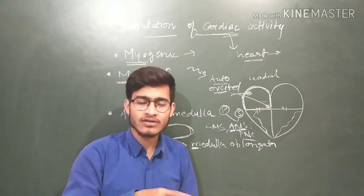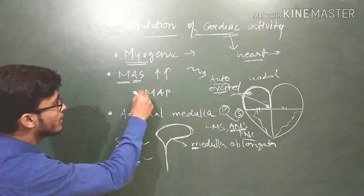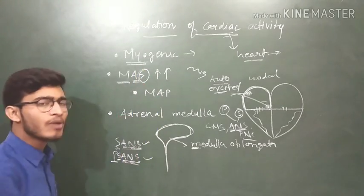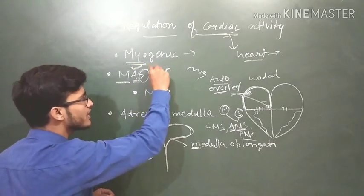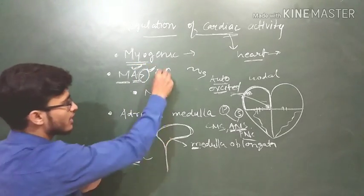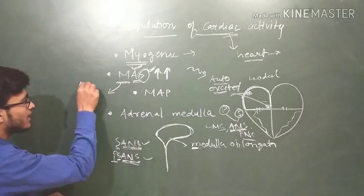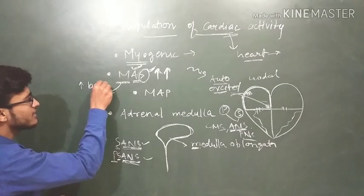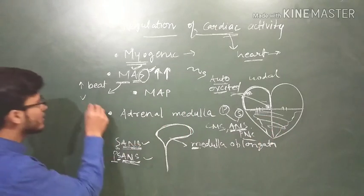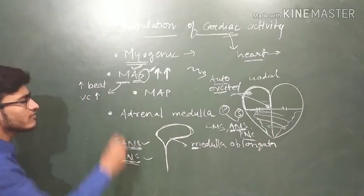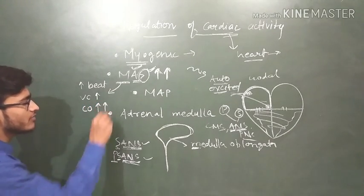So, SANS and PANS, both are types of ANS. So, medulla is controlling the activity of heart via ANS, and ANS has two different parts which will affect the heart in different ways. Each ANS will do different work. So, if there is sympathetic path, medulla oblongata will control ANS, and the sympathetic autonomic nervous system will increase the cardiac output. Because, the sympathetic system will increase the heart beat.